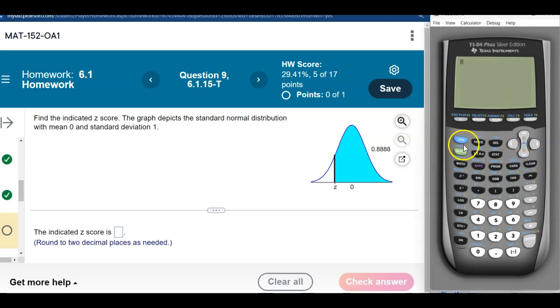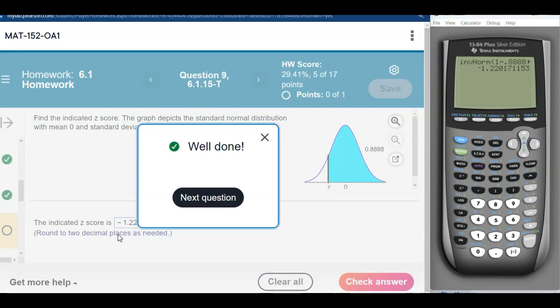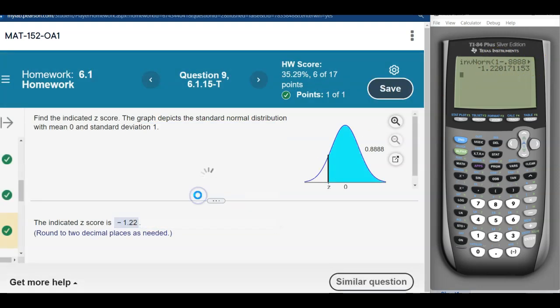So what I would have to do in this case is second VARS to find inverse normal. But instead of putting in 0.8888, I would need to do 1 minus that. Because the area to the right is 0.8888. The area to the left is 1 minus that. And we have to put in area to the left in inverse norm. So mean is zero, standard deviation is 1 still. So there's the number I need, negative 1.22. So when we have an area to the right, the big change is that first number needs to be 1 minus that area to the right.